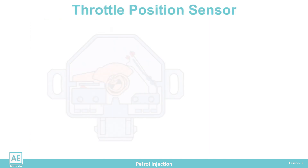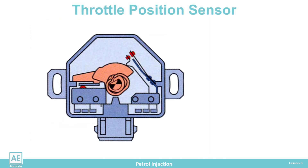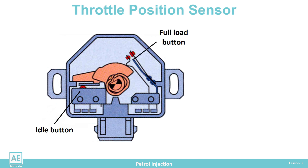The first injection systems used a sensor as a throttle position switch. This sensor consists of two buttons and a cam mounted on the throttle shaft. When the throttle rotates, the sensor cam rotates with it.